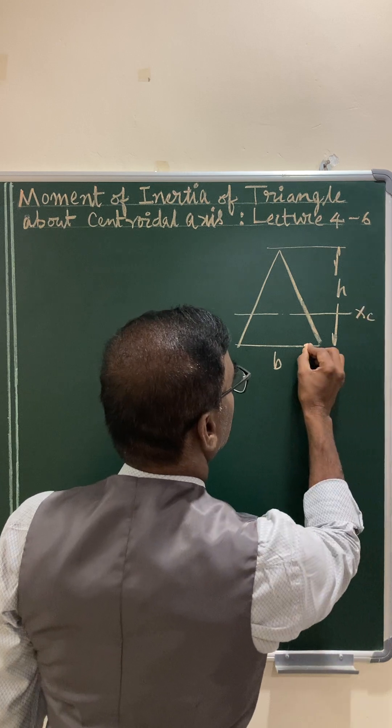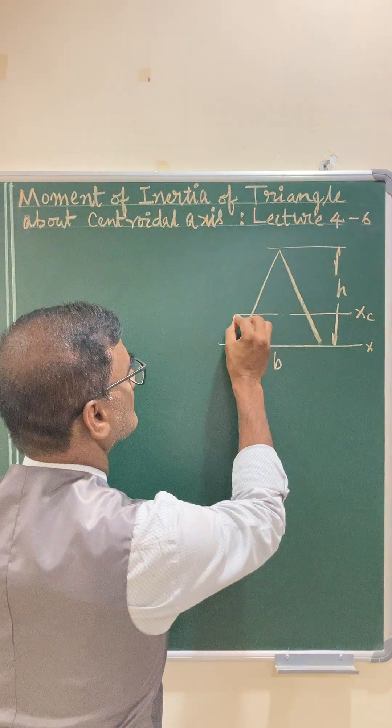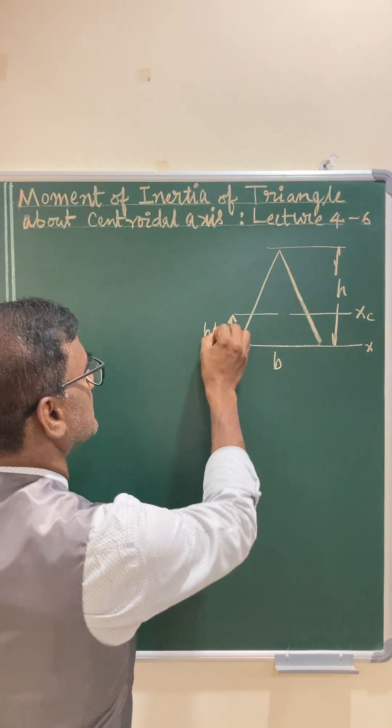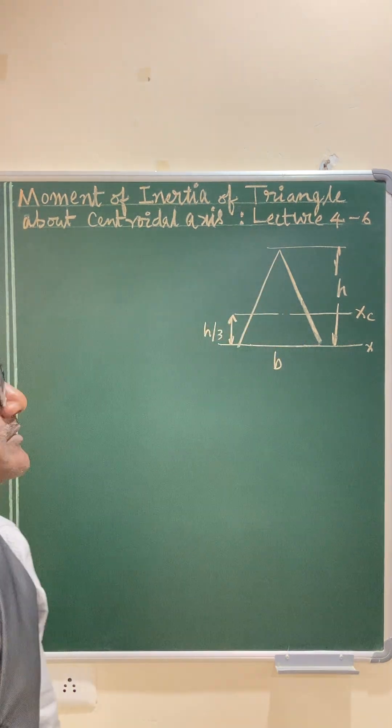This is xc and this is x axis. The distance between the central axis and the base, as you know, is h by 3. From base it is h by 3, from apex it is 2h by 3.